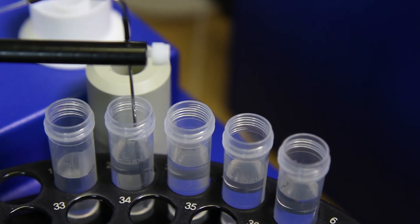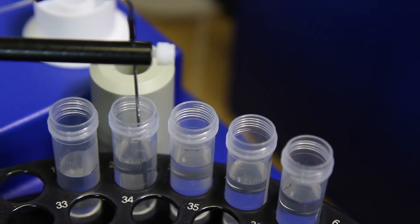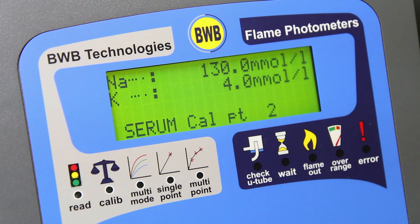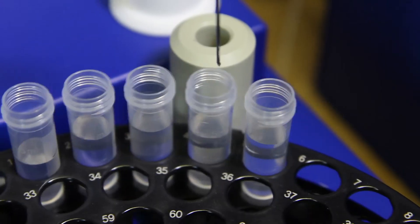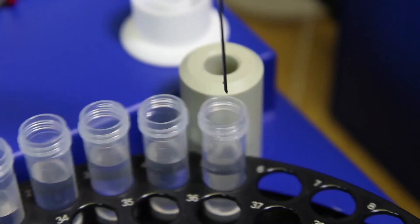The process then repeats for calibration point 2 in position 2 of the carousel. And repeats 3 more times to acquire our 3rd, 4th and 5th calibration points.